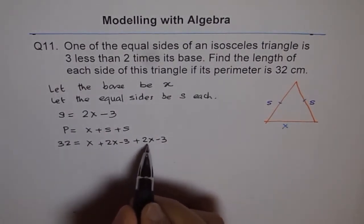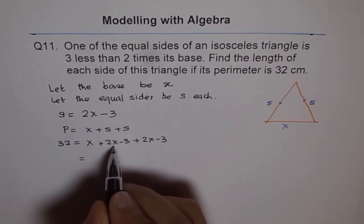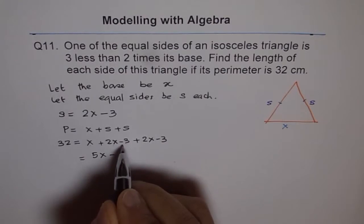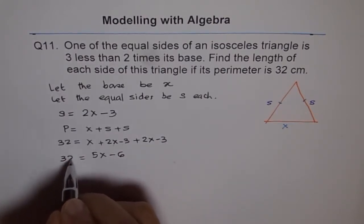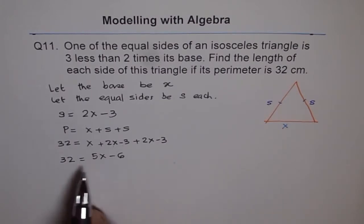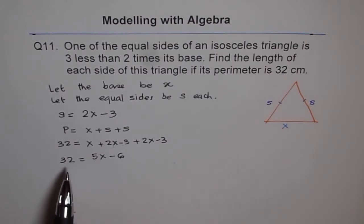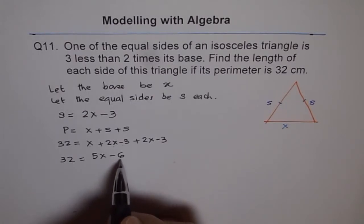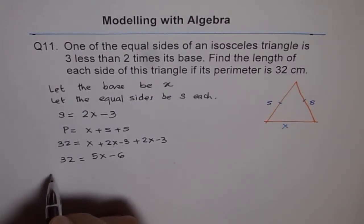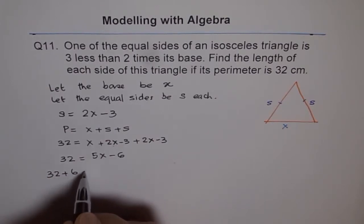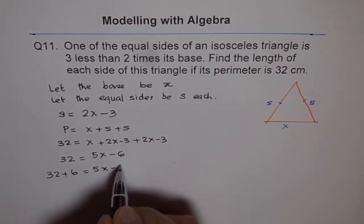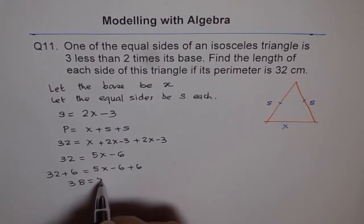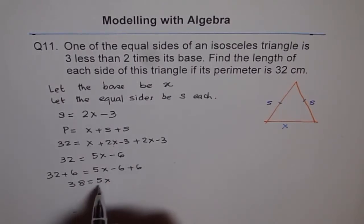Now we can combine the like terms. x plus 2x is 3x, plus 2x is 5x. Minus 3 minus 3 is minus 6, equals 32. So we have a linear equation here, a simple equation where we have to find the value of x. To find this value of x, we should get rid of 6. So we'll add 6 on both sides. 32 plus 6 equals 5x. 38 equals 5x.